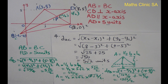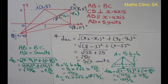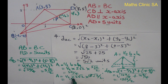This equals: root 2 times root 2 equals 2; 2 times 13 equals 26; 26 times 5 equals 130; divided by 4. So the area of the second triangle is 130 over 4.